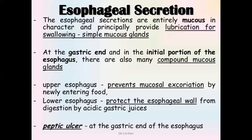Towards the lower esophageal sphincter, compound glands produce mucus containing bicarbonates. In case of regurgitation of hydrochloric acid into the esophagus, this mucus protects the mucosa and neutralizes the acid, preventing heartburn. Without this protection, hydrochloric acid would damage the mucosa, resulting in peptic ulcers. The upper esophageal mucus prevents mucosal excoriation from a dry or rough bolus scratching the mucosa.